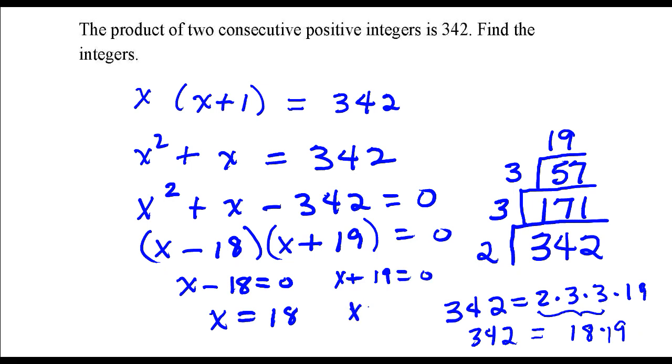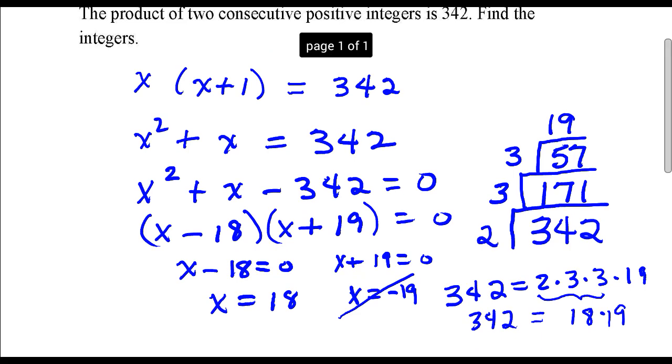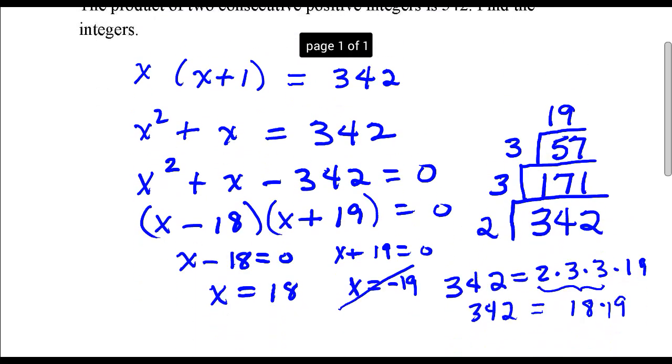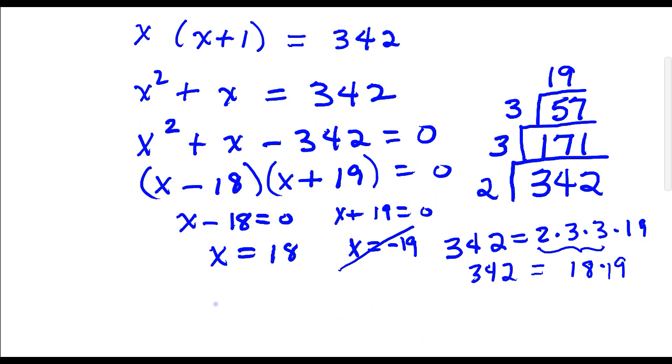That gives me x is equal to negative 19. I'm going to go ahead and throw this one out, because in the context of the problem, the first sentence says the product of two consecutive positive integers is 342. So negative 19 is not positive, so that's why we throw that out. So those two integers would be 18, and then the next consecutive integer would be 19.